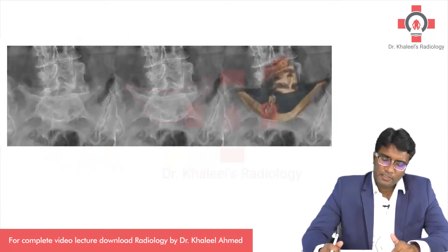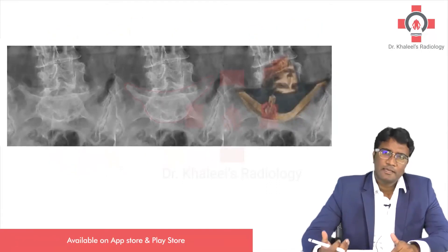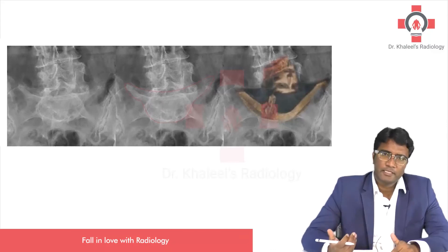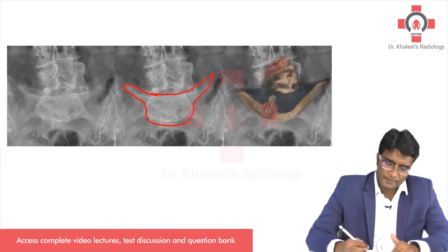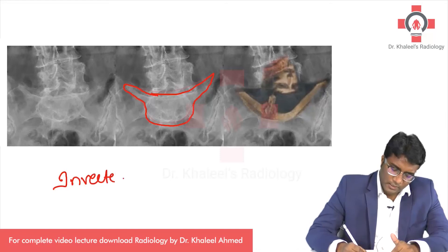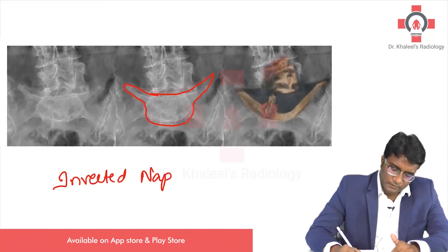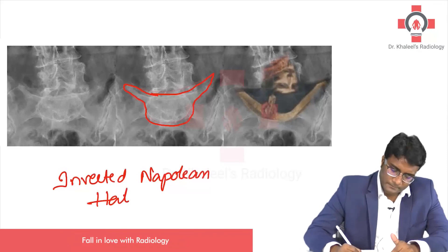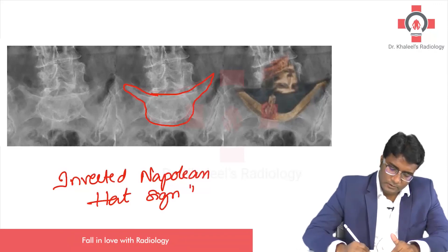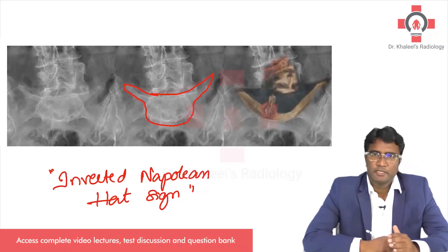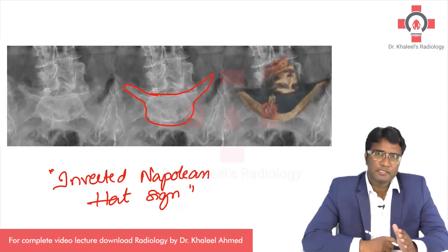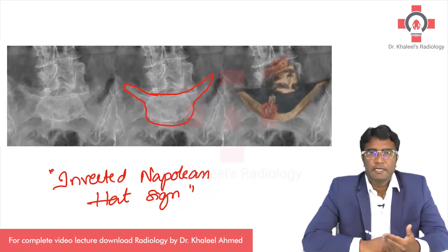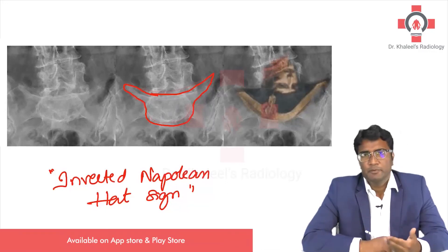In a frontal projection, this same spondylolysis — especially L5 over S1 — gives the appearance of an inverted Napoleon hat. This is called the inverted Napoleon hat sign, also a feature of spondylolysis. So spondylolysis in a posterior oblique view shows a beheaded Scottish dog appearance, and on a frontal view it shows an inverted Napoleon hat sign.